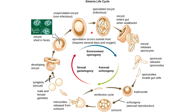Starting with the Eimeria lifecycle: in an animal host, unsporulated oocysts are shed in the feces. Oocysts are extremely environmentally resistant and can survive for up to one year in dry, cool environments. Once released, the unsporulated oocysts undergo meiosis upon contact with oxygen and moisture — this is when sporulation occurs, and this is what is necessary for the oocysts to become infectious.